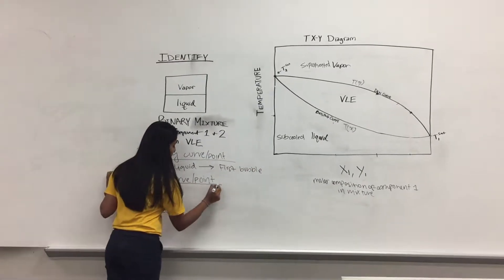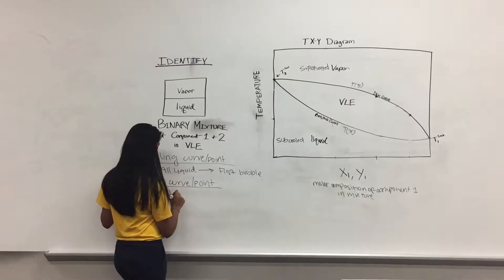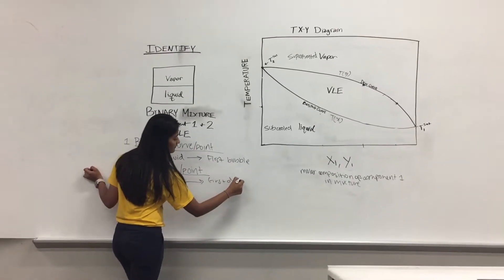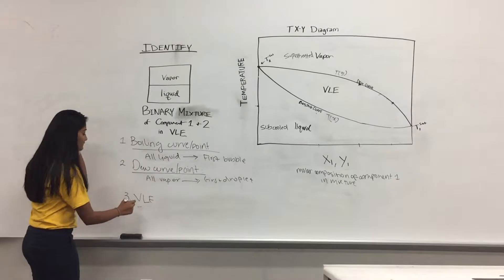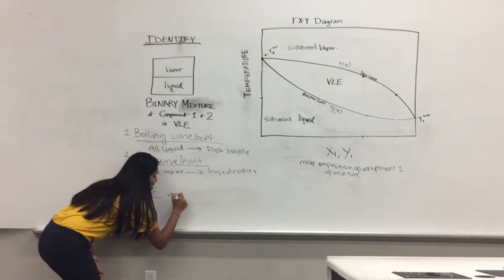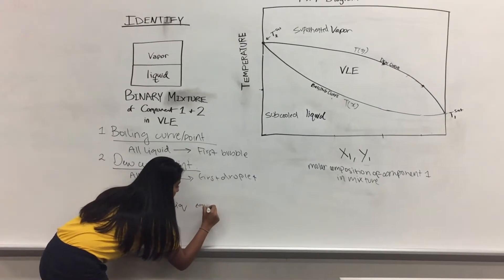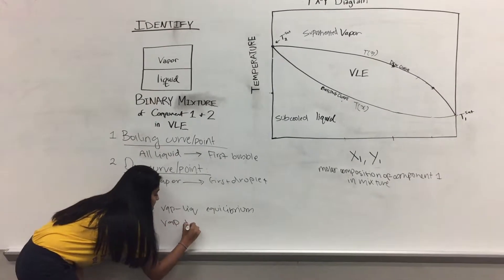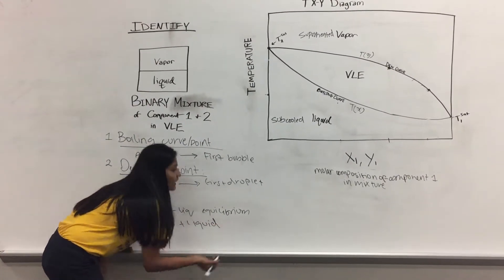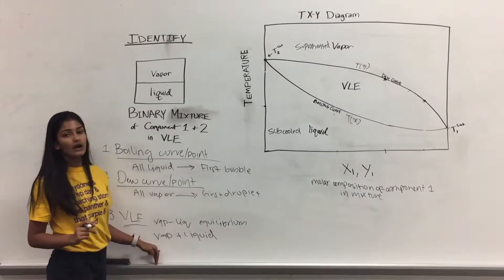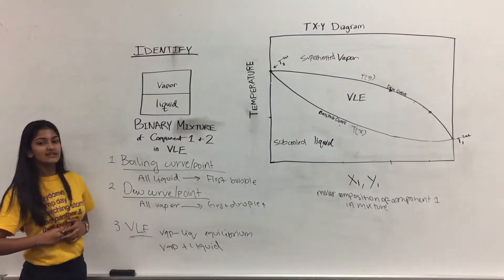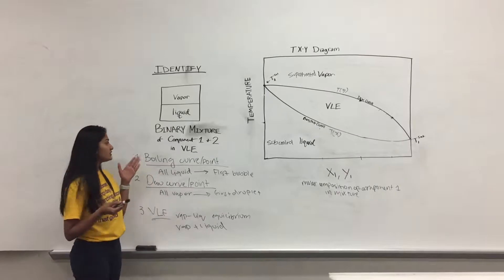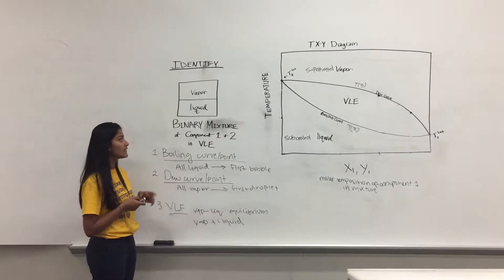The dew curve is where we have all of our mixture in vapor phase and we encounter the first liquid droplet forming. VLE, which is short for vapor-liquid equilibrium, is where we have both phases — vapor and liquid — coexisting. The TXY Diagram I'm about to show is for a binary mixture of component 1 and component 2 in vapor-liquid equilibrium.